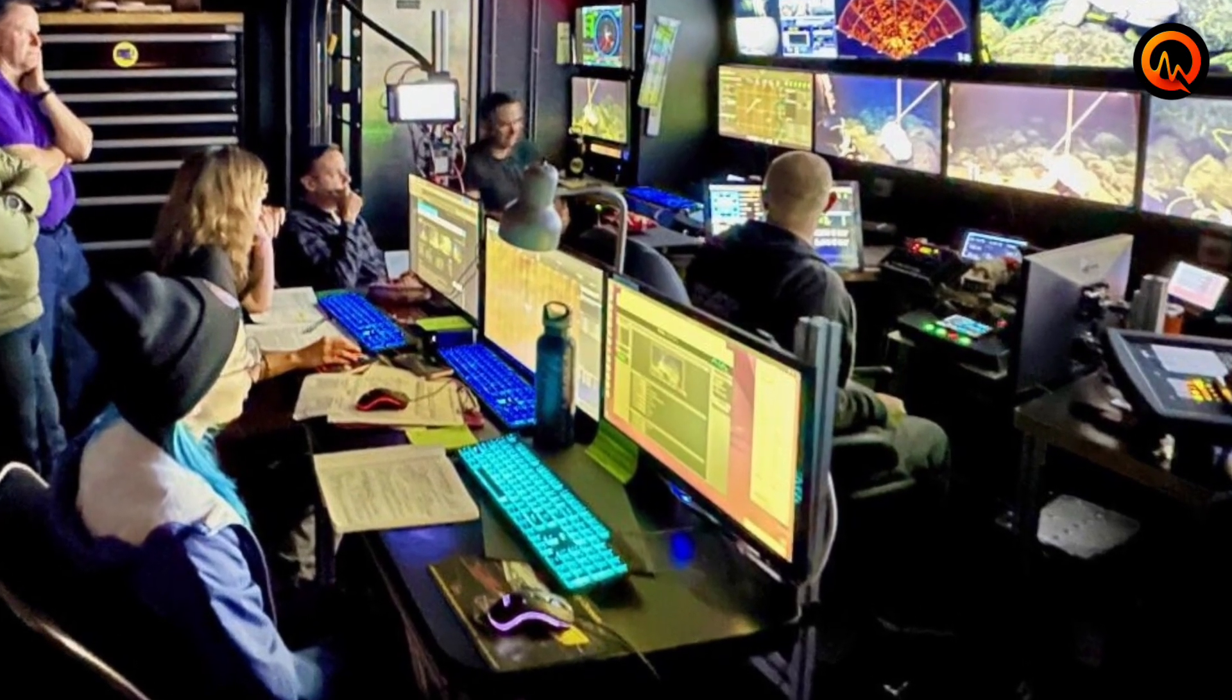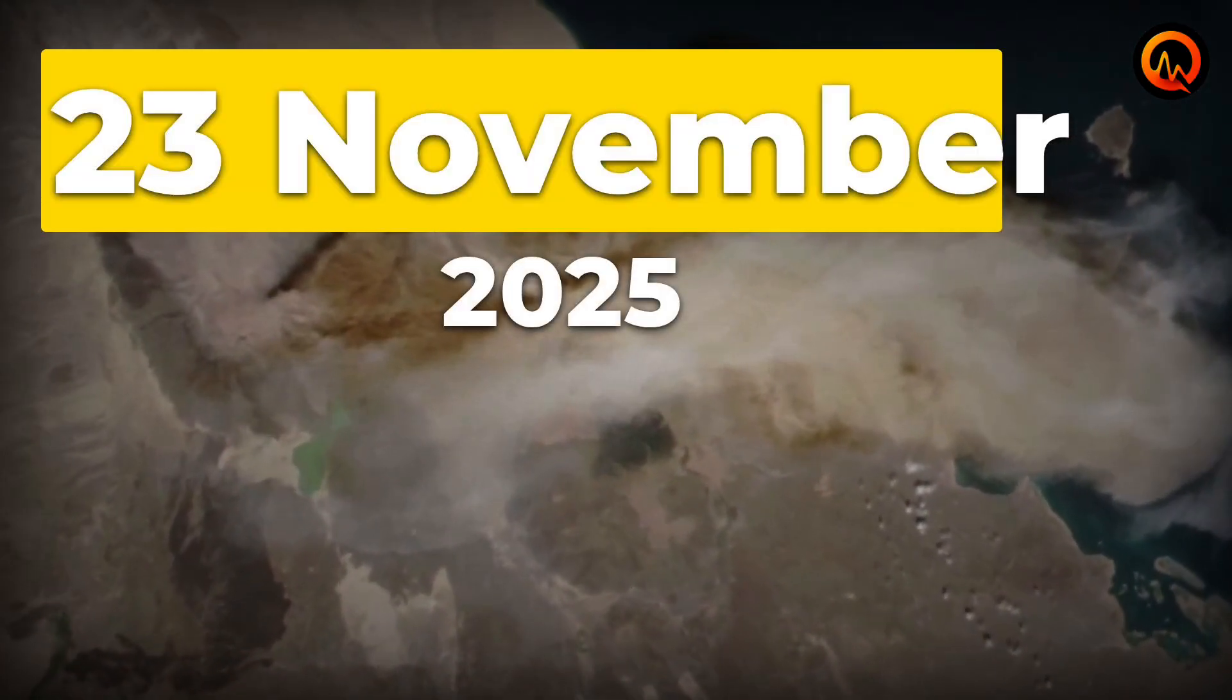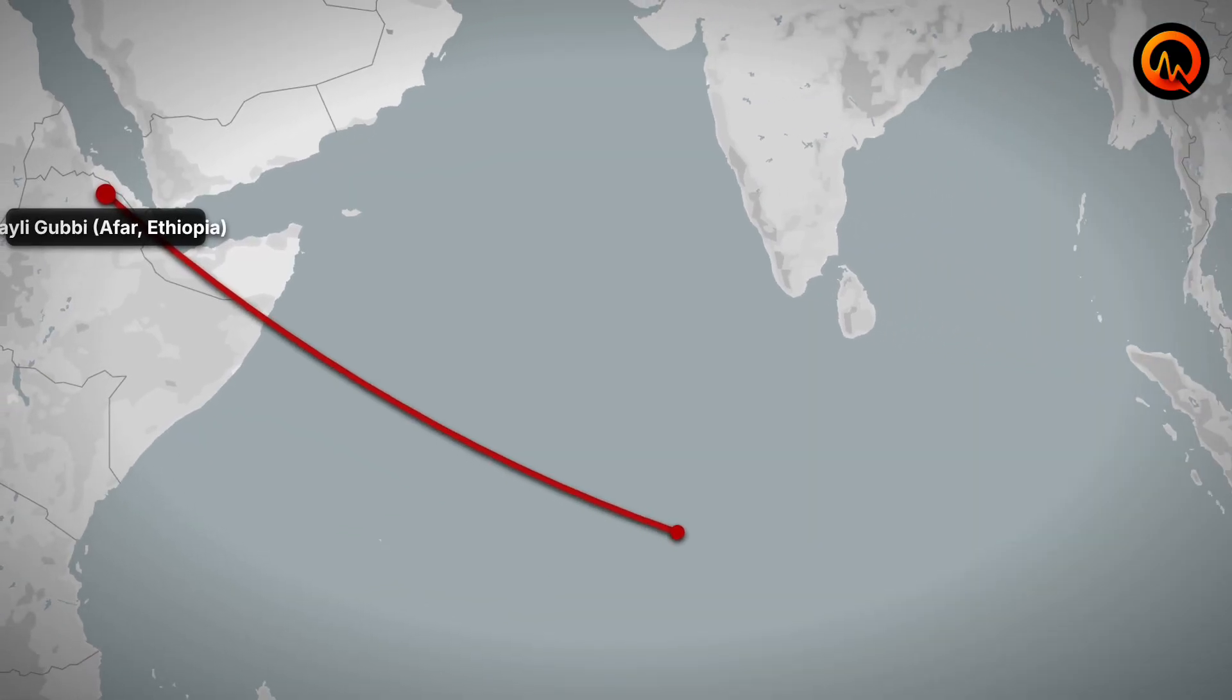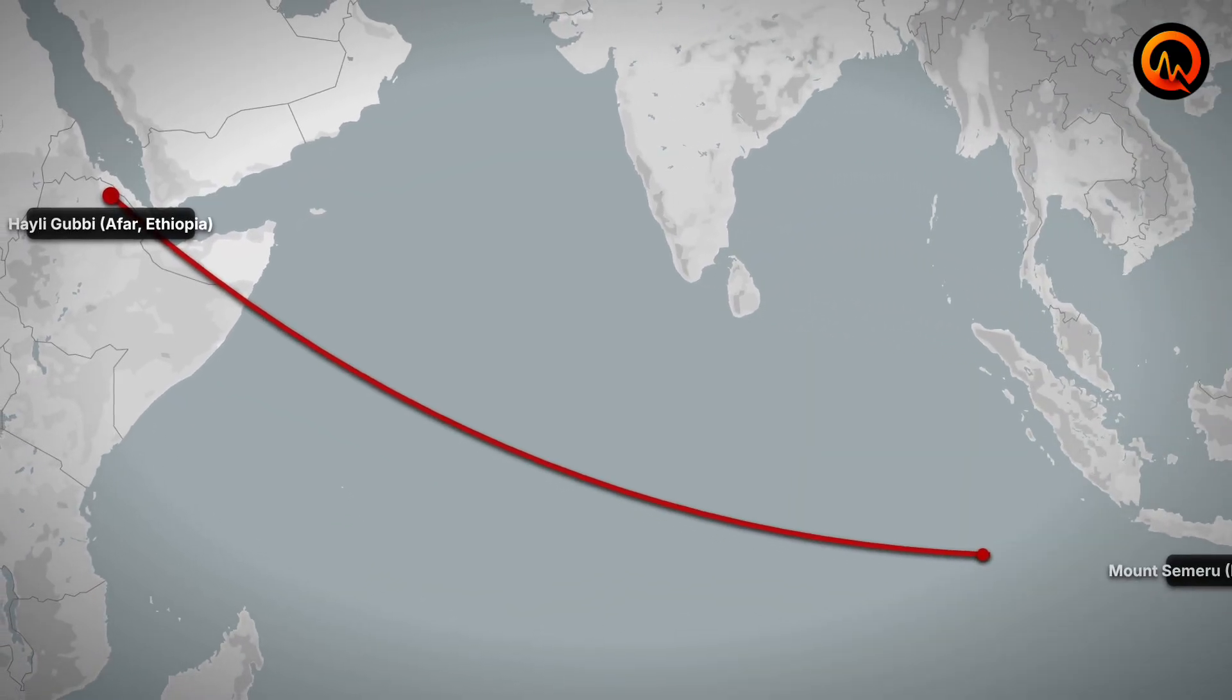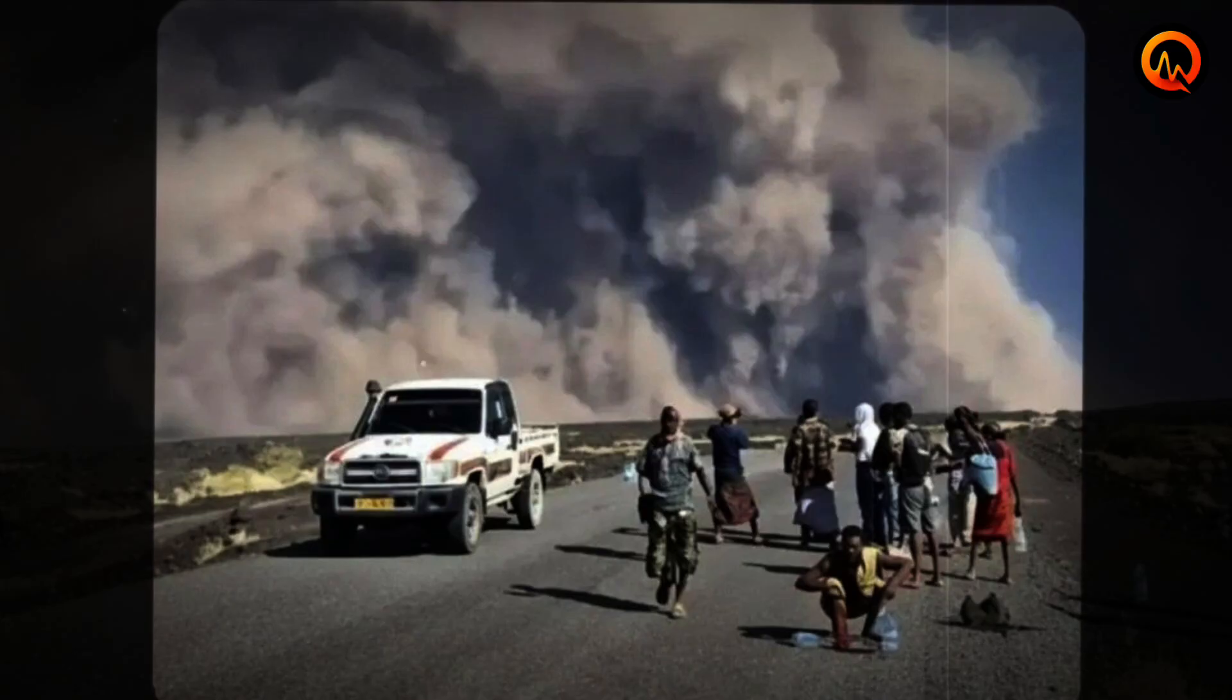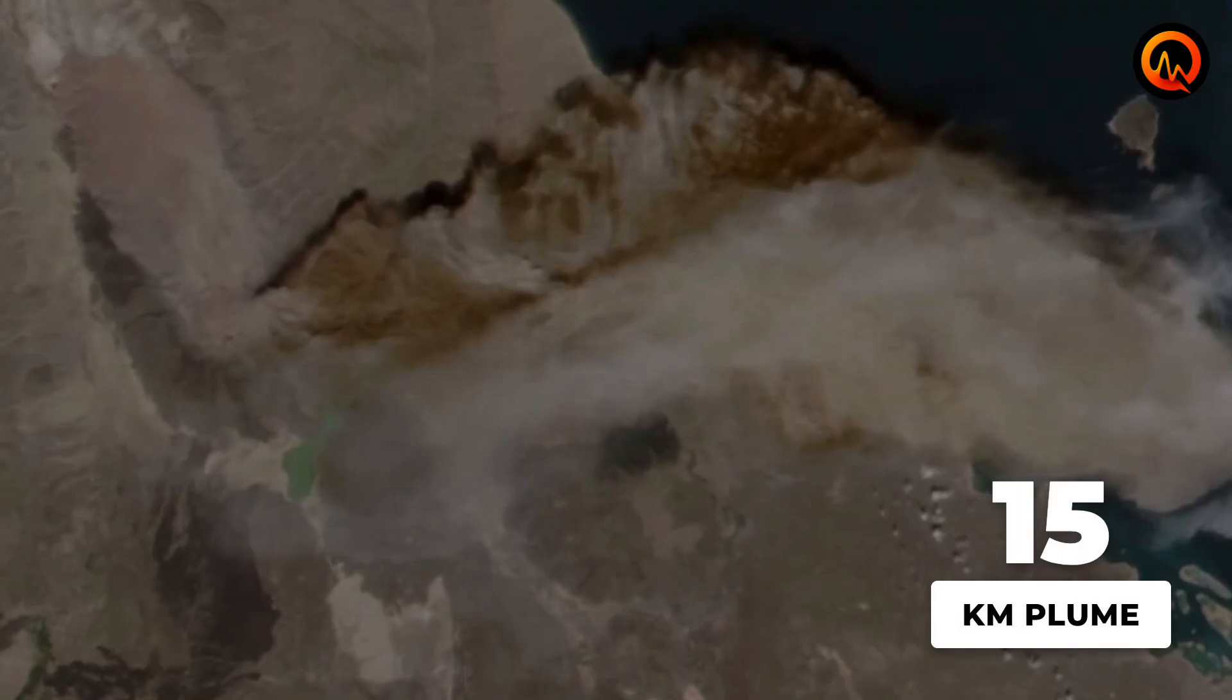The numbers tell the story. On November 23rd, Ethiopia's Haley-Gubi volcano erupted with such force that satellite imagery tracked its ash plume across the Red Sea and into East Asian airspace. This represents one of the most significant Ethiopian volcanic events in recorded history, with ash reaching altitudes of 15 kilometers above sea level.